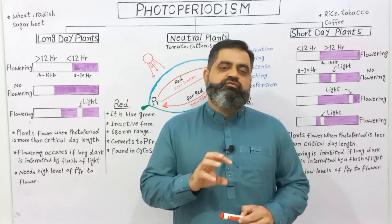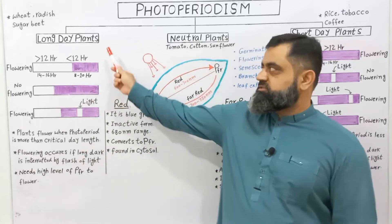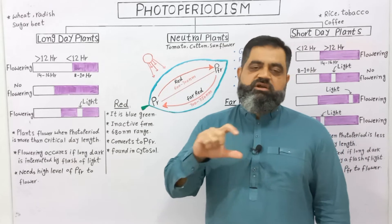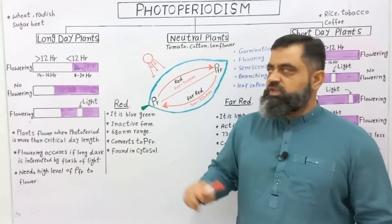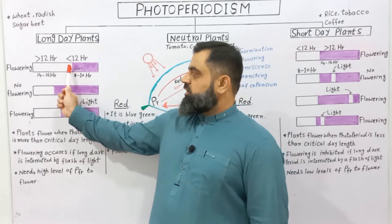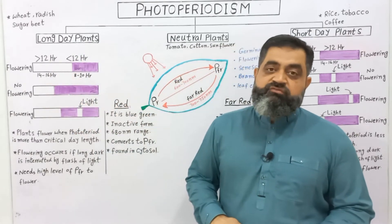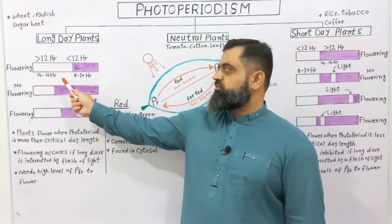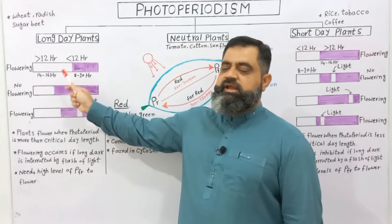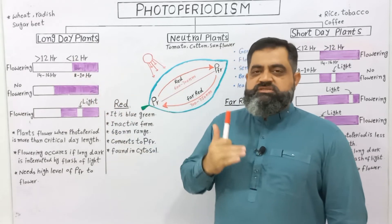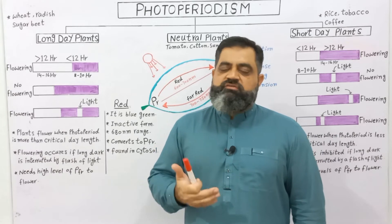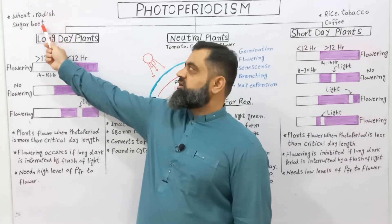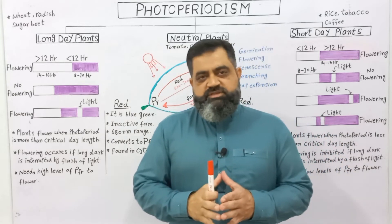There are three major categories of plants on the basis of photoperiodism. Number one: long day plants. Long day plants usually flower and grow in those days when days are long and nights are short. These plants usually need more than 12 hours of critical photoperiod for flowering, and they need short nights — usually from 14 to 16 hours of day and 8 to 10 hours of night. If this photoperiod is available, these plants will flower and growth will take place.